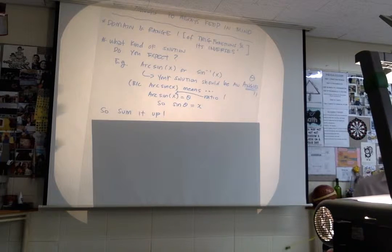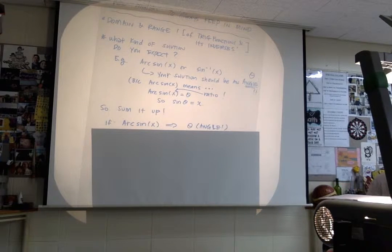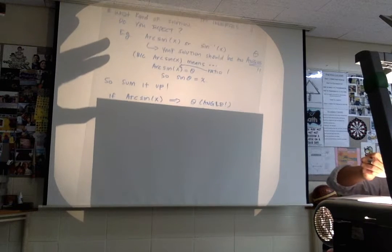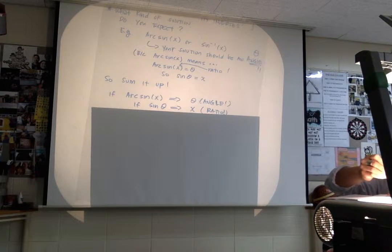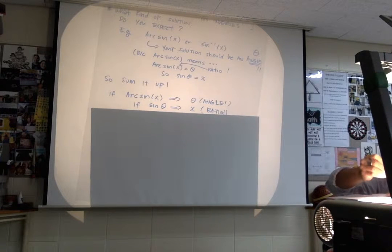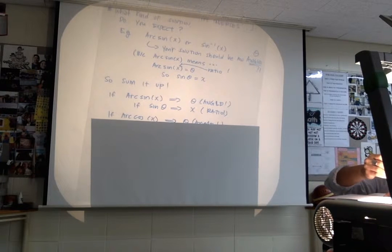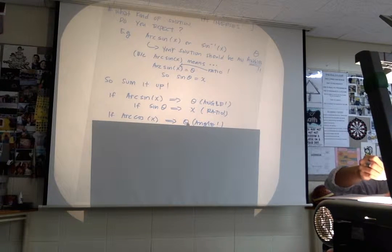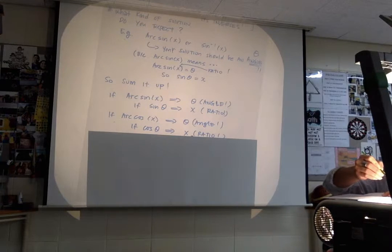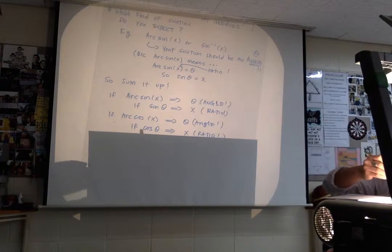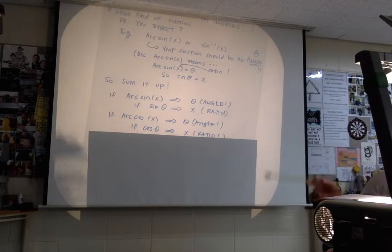Let's sum it up. If you have arc sine of x, remember that you're looking for the angle. If you have sine theta, that means you're looking for the actual ratio. If you have arc cosine, you're looking for the angle. If you have cosine theta, that means you're looking for the ratio. We're used to doing it this way; we're just not as familiar with arc sine and arc cosine.